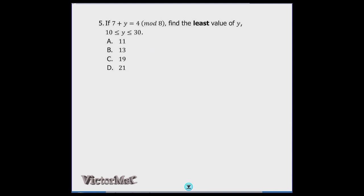Number five is about modular arithmetic. If 7 + y ≡ 4 (mod 8), find the least value of y where 10 ≤ y ≤ 30. The first step is to find what value of y satisfies this.